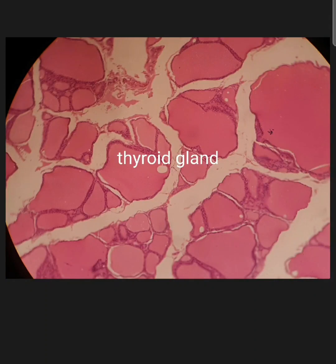We are going to talk about the histological slide of a thyroid gland. In the thyroid gland we have characteristic follicles, but the shape and size of every follicle varies. This is a small follicle, and the previous one drawn was a little bigger. So there is a varying size of the follicles.